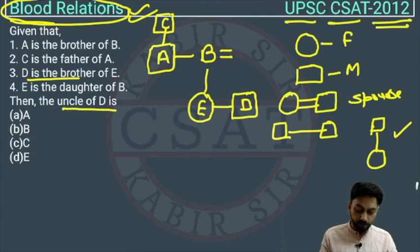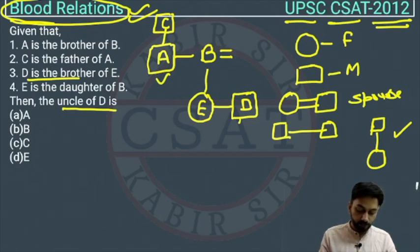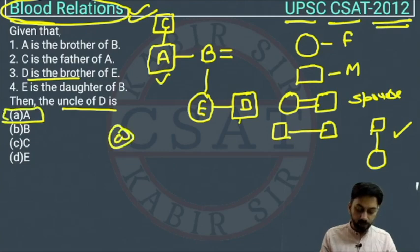The question asks: who is the uncle of D? The uncle of D is A, because A is male and is the brother of B, who is the parent of D. So the answer is option A.